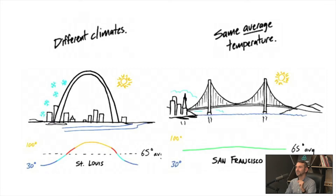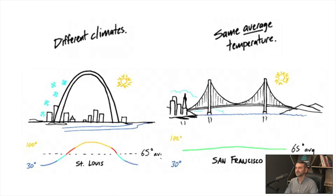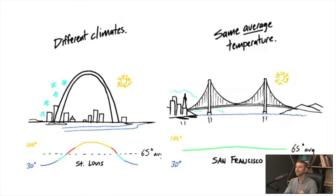But the problem is that if you look at various moments throughout time, you can see that in San Francisco it's pretty much flat, while in San Luis, you have pretty cold moments and pretty hot moments as well. And that's why you need to segment the NPS.